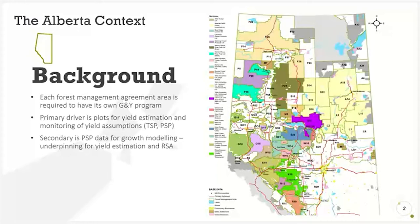A secondary goal for the growth and yield program is to collect PSP data for growth model development. Growth models are quite important in Alberta — there's increased use of growth models for creating yield estimates across the province, and they're also used in assessing reforestation success through the Reforestation Standard of Alberta.